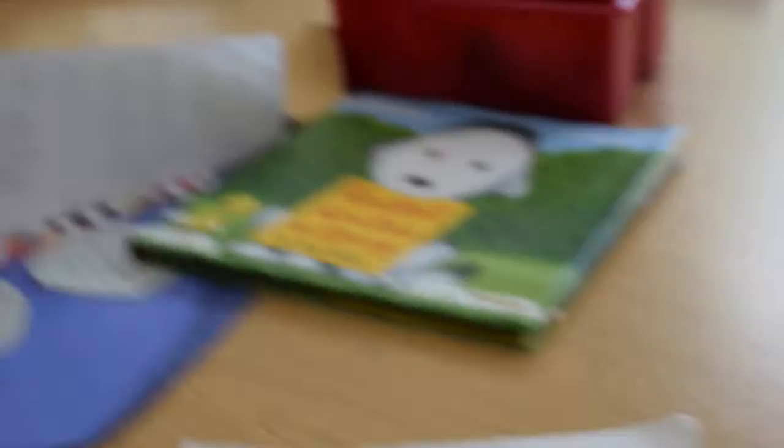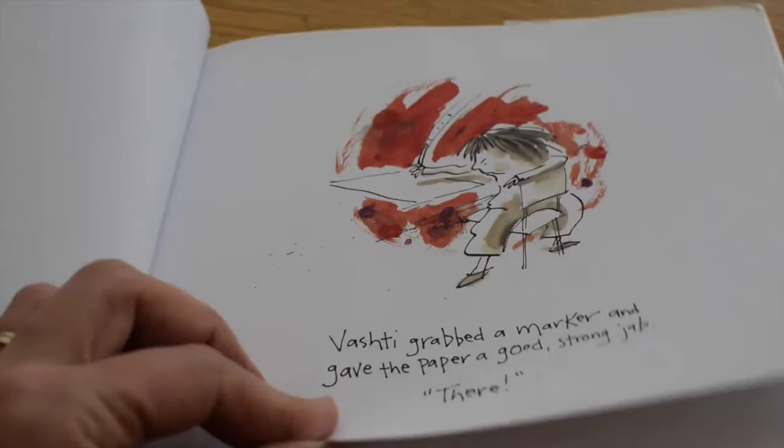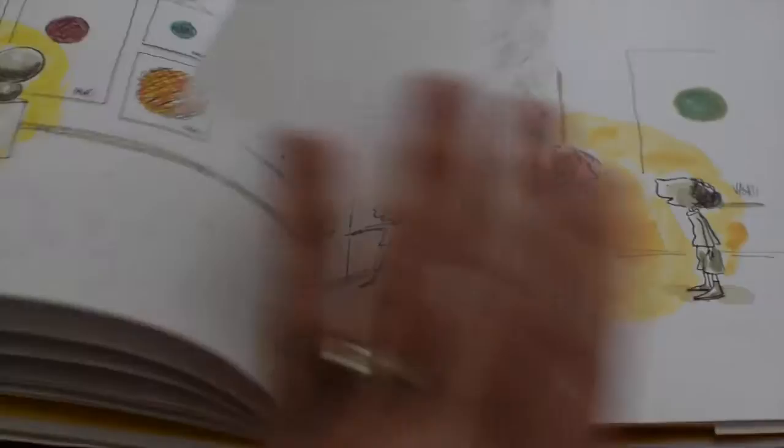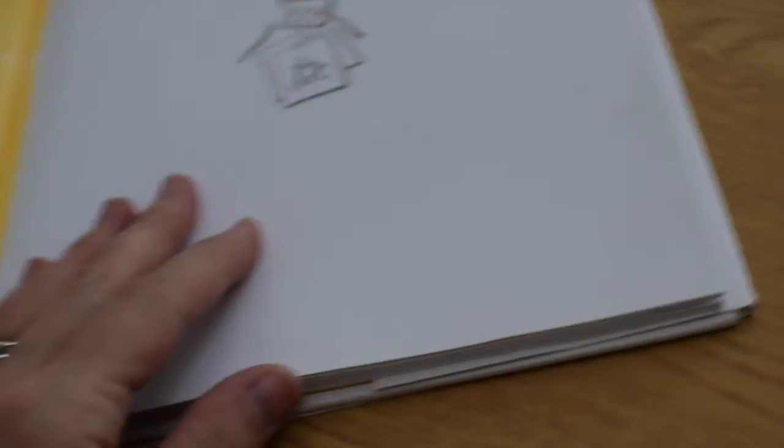The first book is called The Dot by Peter H. Reynolds. In this book, the main character, Vashti, doesn't think that she can draw. And her teacher sort of inspires her to just try and see what she can do. She ends up discovering her passion for art by making dots. It's just a really short read, great for the beginning of the year because attention spans are short. We talk about how sometimes we don't think we can do something or something seems too hard for us, and then we give it a try and we discover that we really like doing that thing, and then we get better at it by doing it over and over again.